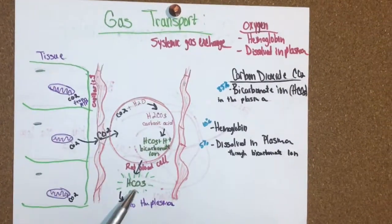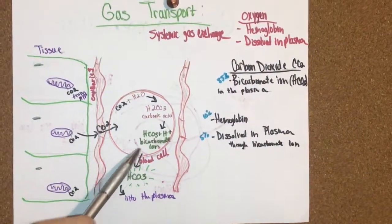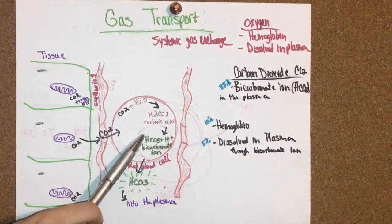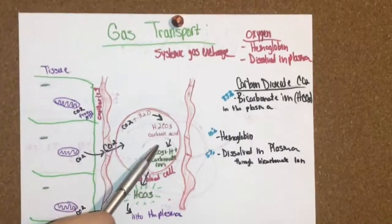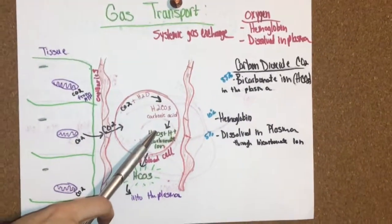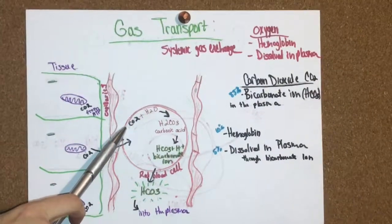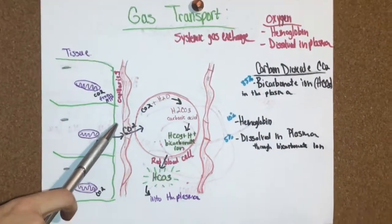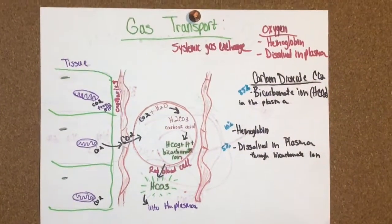After this process is done, bicarbonate ions come back into the red blood cell, go back into the carbonic acid, they're turned back into gas, into the alveolar sac, and then that carbon dioxide is exhaled through the lungs.